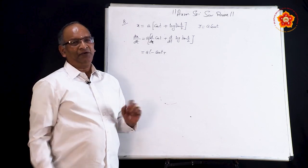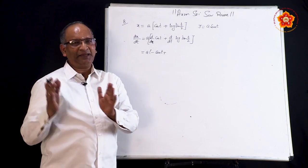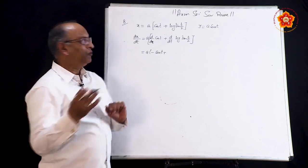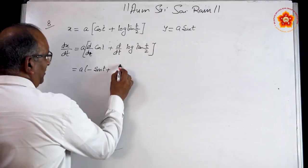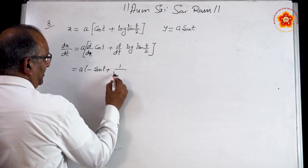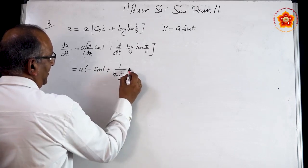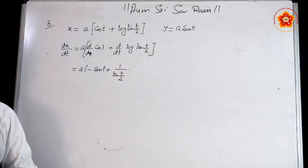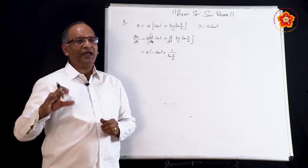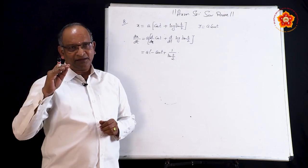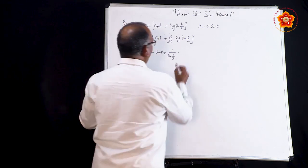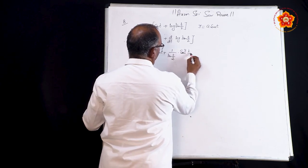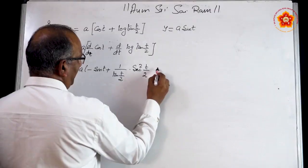To handle log(tan(t/2)), take tan(t/2) as u, so it becomes log(u). The derivative of log(u) is 1/u. So it becomes 1 divided by tan(t/2), multiplied by the derivative of tan(t/2). To find the derivative of tan(t/2), take t/2 as v; the derivative of tan(v) is sec²(v), and the derivative of t/2 is 1/2.